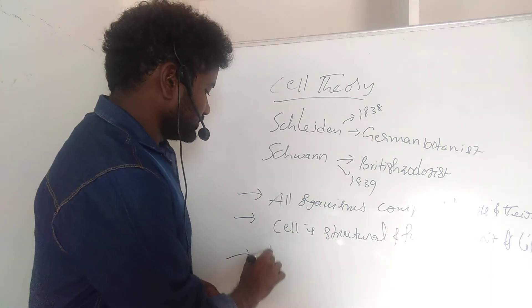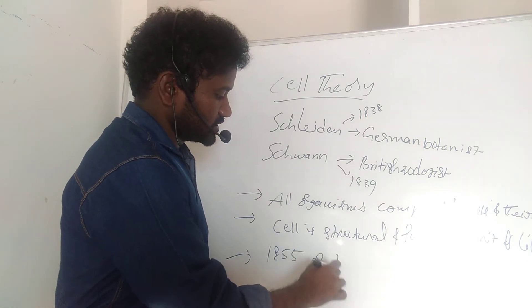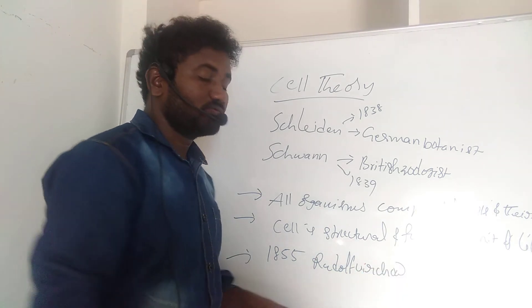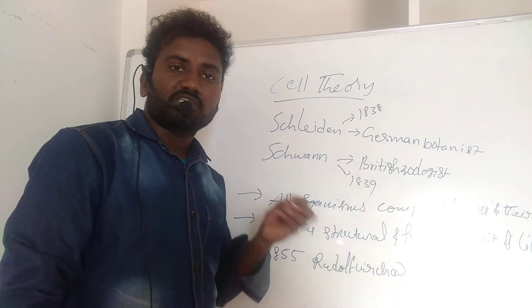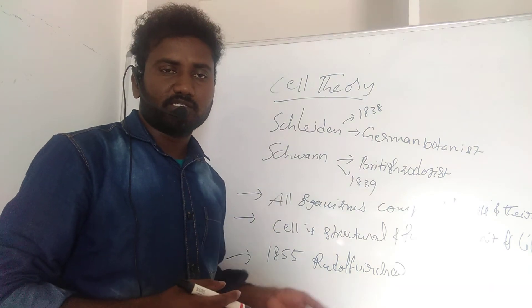In 1855, Rudolf Virchow, another scientist, first explained that cells divide and new cells arise from pre-existing cells.